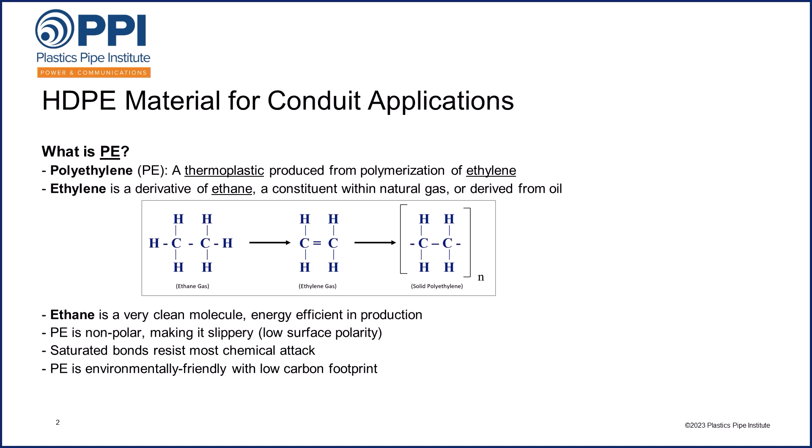Ethane itself is a very clean molecule and is very energy efficient in production. When we react many ethylene molecules together, we get long chains. We call the shorter chains wax, but as the chains get longer, we call them polyethylene. It is a very tough material, has a low coefficient of friction so it is very slippery, has high abrasion resistance, and is resistant to most chemical attack. These properties provide lots of useful benefits in construction environments. It is also an environmentally friendly product with a low carbon footprint compared to non-plastic materials.